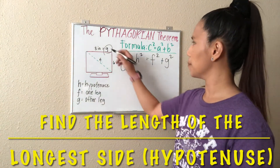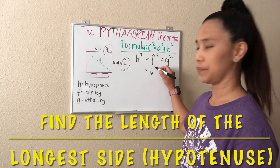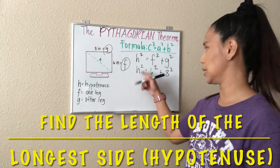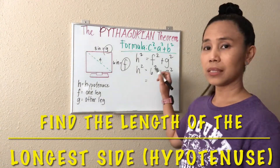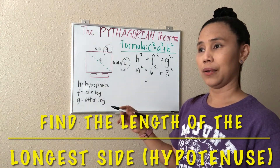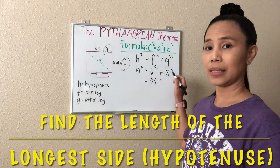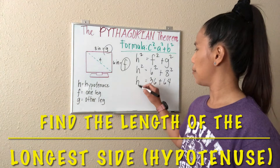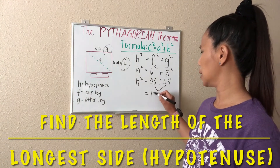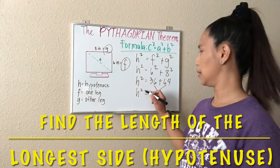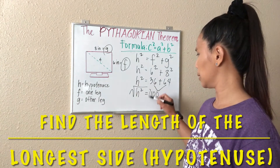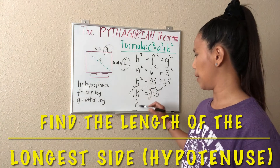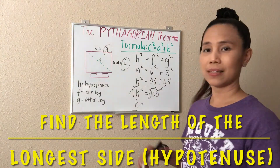We are now ready to substitute the values. F is given, so we can have 6 squared plus G is equal to 8, so 8 squared. And since we are looking for the value of H, we just have to copy that first. 6 squared means we multiply by itself, so 6 times 6 is equal to 36. And then 8 squared is multiplying 8 by itself — 8 times 8 is 64. So we have H squared. Now to find that, we can add 36 and 64, and that will give us H squared equals 100.